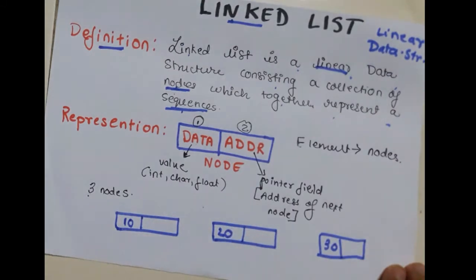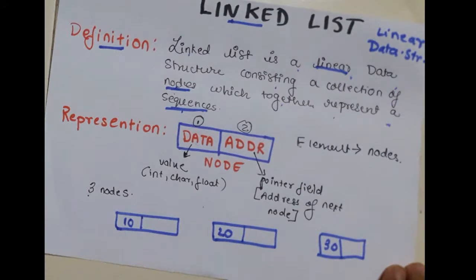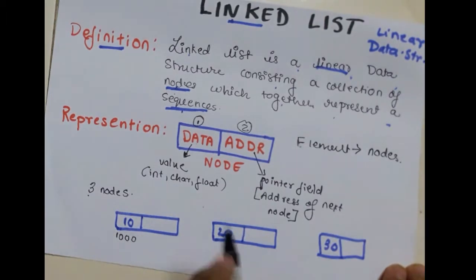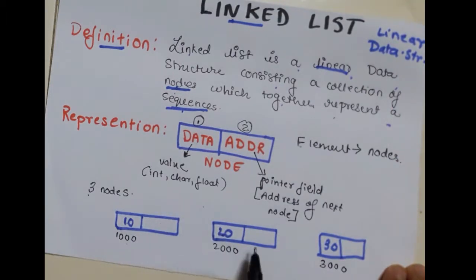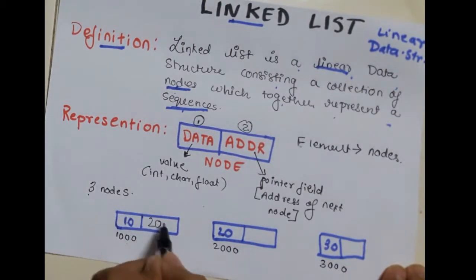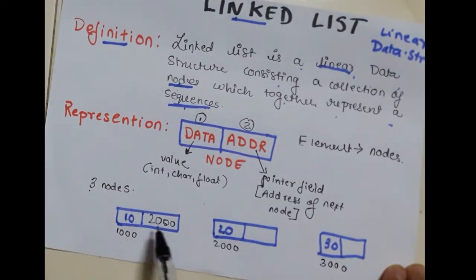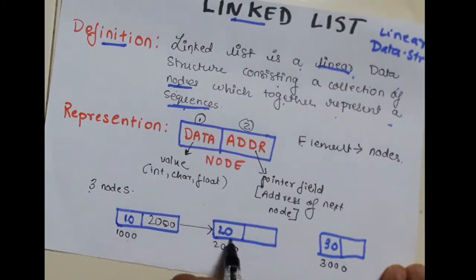The next field is the address field. To fill this, we first allocate an address to each node. The address of the first node is 1000, the second node is 2000, and the third node is 3000. Now this block will consist of the address of the next node. The next node after 10 is 20, whose address is 2000. Writing 2000 here creates a link to the next node — this node will lead you to the next node with the help of this address.